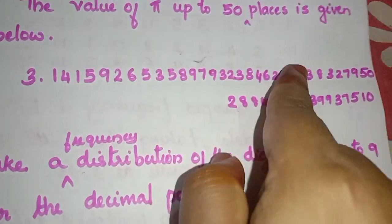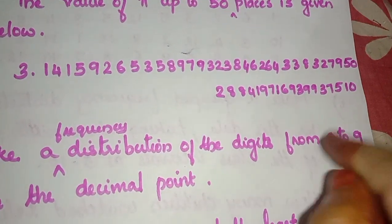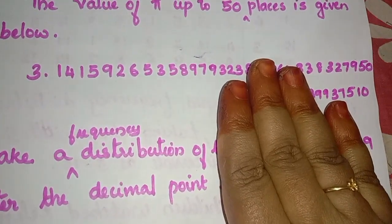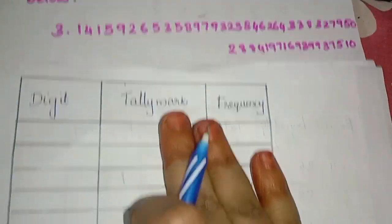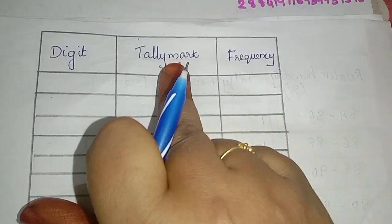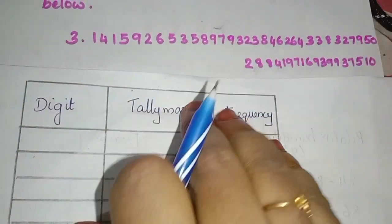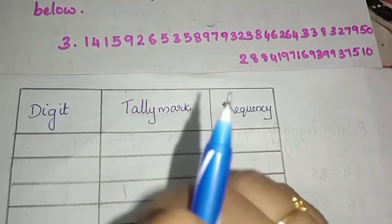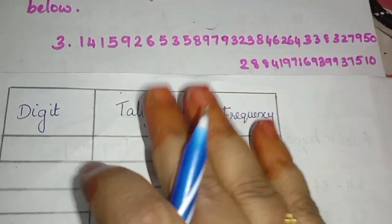So if we look at these digits, we will look at the frequency distribution table. We will show you the frequency distribution table. The frequency distribution table will be planned and updated accordingly.